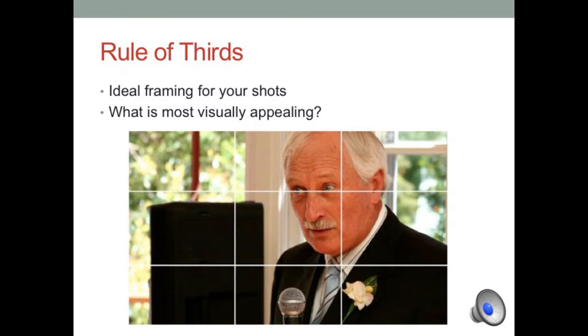Next, we're going to talk about rule of thirds. And so you can see in your viewfinder that your screen is separated by four different lines, two horizontal and two vertical. As you see in the picture here, this is the ideal framing for how you want your shots. So you can see this guy is the subject and he is on one of these vertical lines.